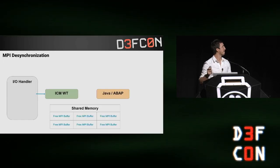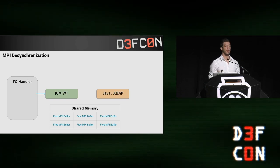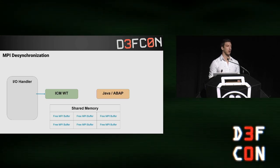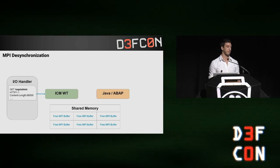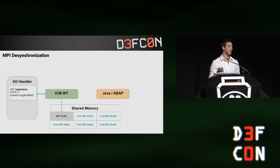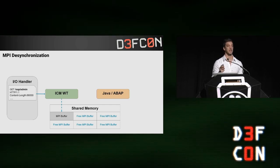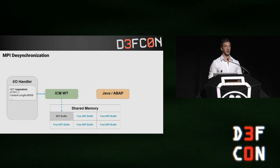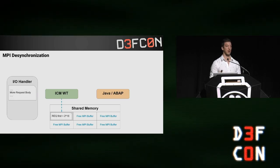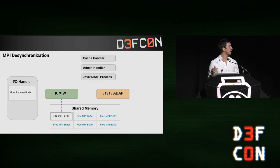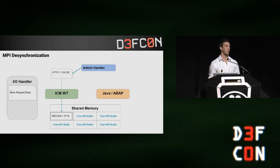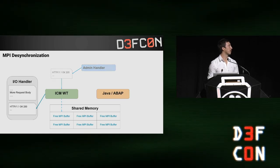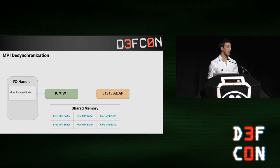Now let's look at the first vulnerability. The worker thread is not expecting to resolve a request using the body, because internal handlers shouldn't use that kind of information. But what if we send a long request that is not handled by the worker process but instead handled by an internal handler? We have a GET request to /sap/admin containing 66,000 bytes. Only the first 65 kilobytes are stored in an MPI buffer. The parser includes the cache handler and admin handler. The cache handler fails, but the admin handler generates a response, which is sent to the client. All handlers are removed and the MPI buffer is freed.